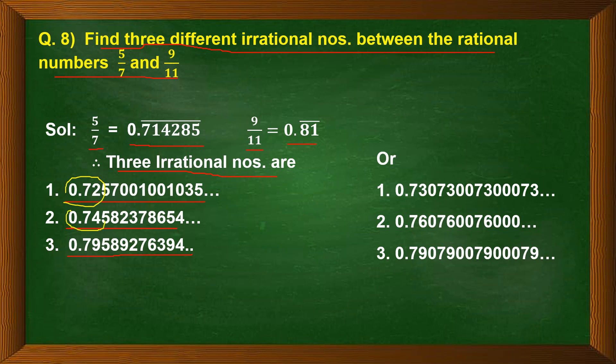Or you can have another set of irrational numbers as 0.730730073 and so on, 0.7607600760, 0.790790079 and so on. Again, 0.73, 0.76, 0.79 are all between 0.71 and 0.81.